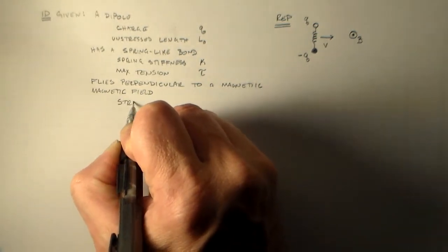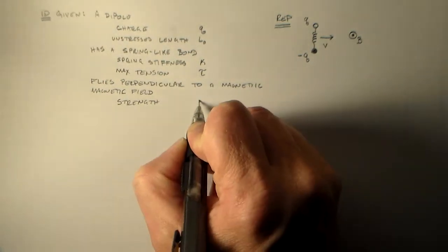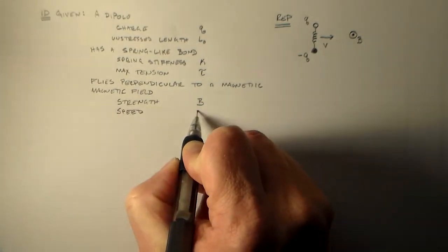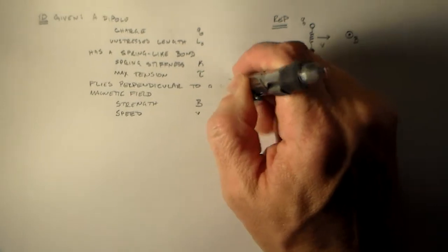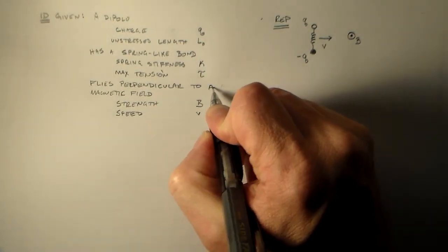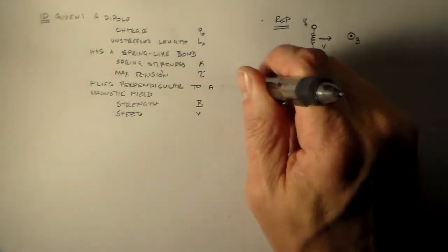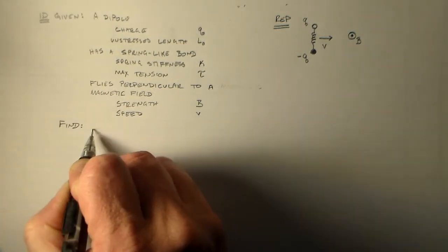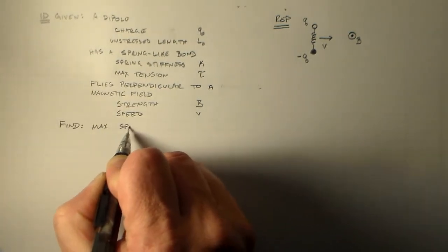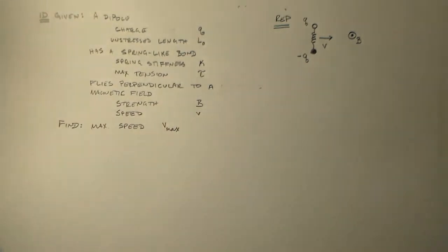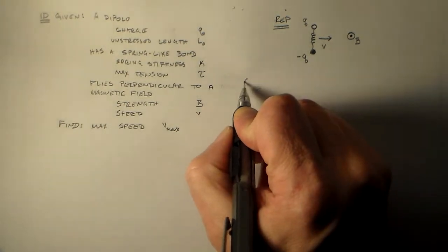It's of strength B. And the particle, the dipole has a speed V. So we got some stuff going on there, everything's looking okay, we're all happy. We know what we've got to work with. So we'll find the maximum speed before it flies apart because we were reckless. High speed equals reckless. Are you reckless?